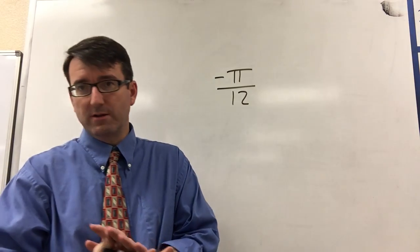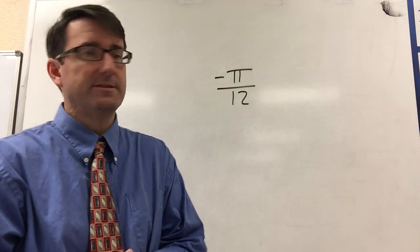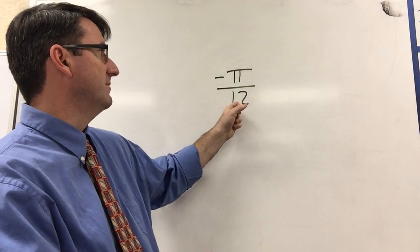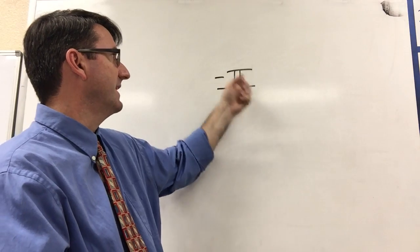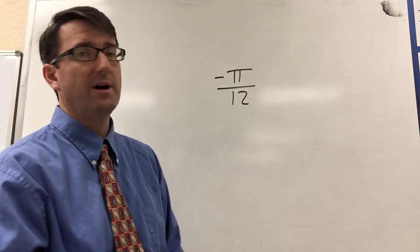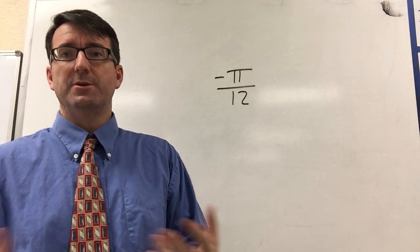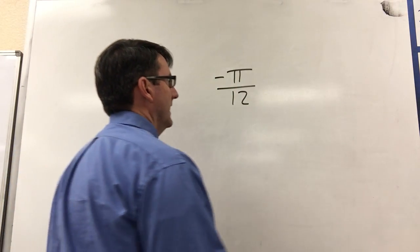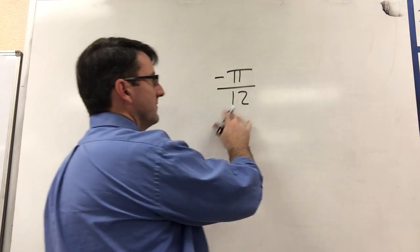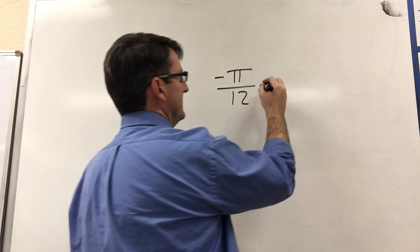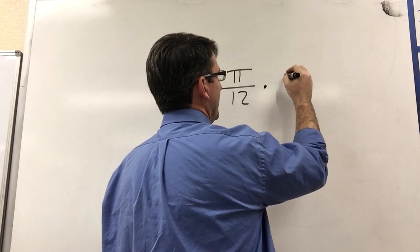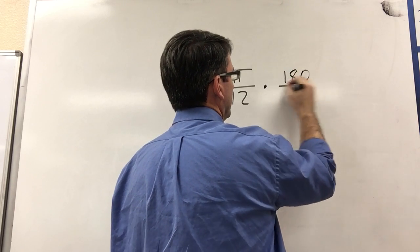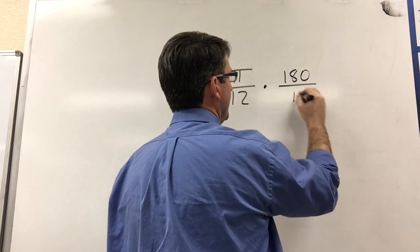Number 12 asks us to convert the radian measure negative pi over 12 to a degree measure. To convert from radians to degrees, we're going to multiply by 180 over pi.